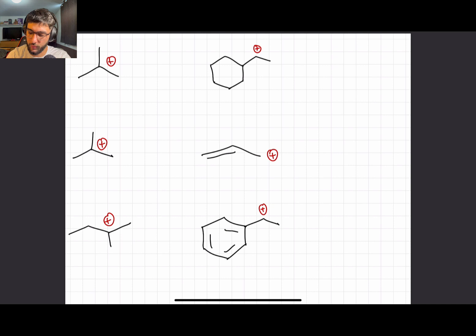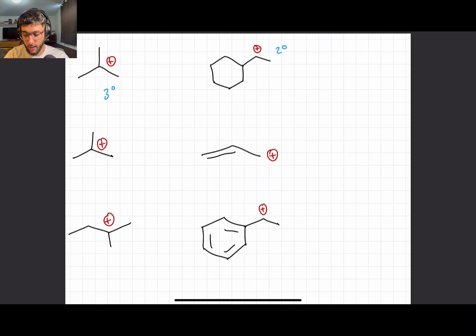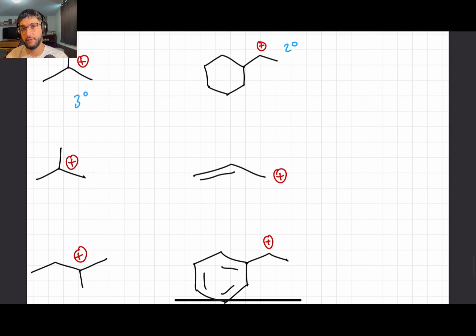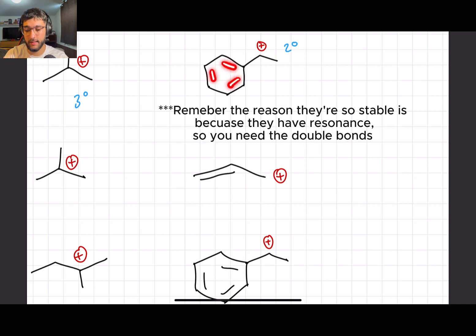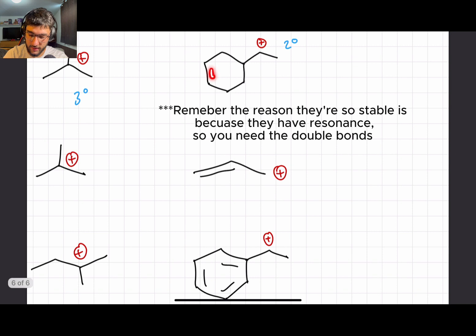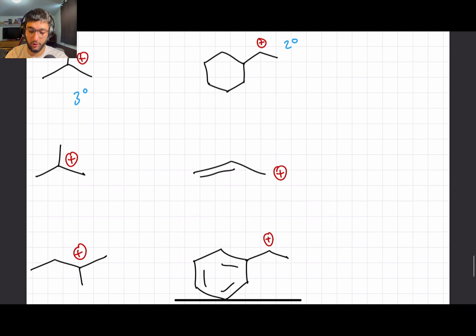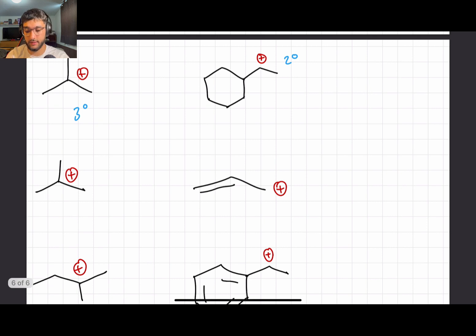Looking at the first molecule, we see it's a tertiary carbocation. The second one is a secondary carbocation. Don't be confused just because the carbocation is next to a ring — benzylic structures must have a conjugated pi system with three double bonds going around the ring. If there's a plus charge next to a ring without a conjugated pi system, it's not benzylic — it's an ordinary secondary carbon. So tertiary versus secondary: the tertiary is more stable.